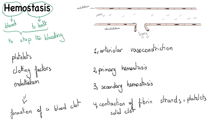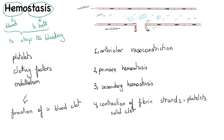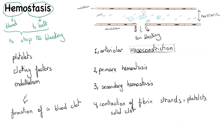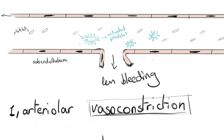The major idea is that when an injury happens, the first reaction is vasoconstriction — narrowing the lumen of the blood vessel so that less blood flow comes to the site of injury and therefore less bleeding occurs. Then platelets get activated, increase their surface area, and aggregate at the site of injury to form a plug to stop the bleeding. This is the second step, or primary hemostasis: the formation of a platelet plug.